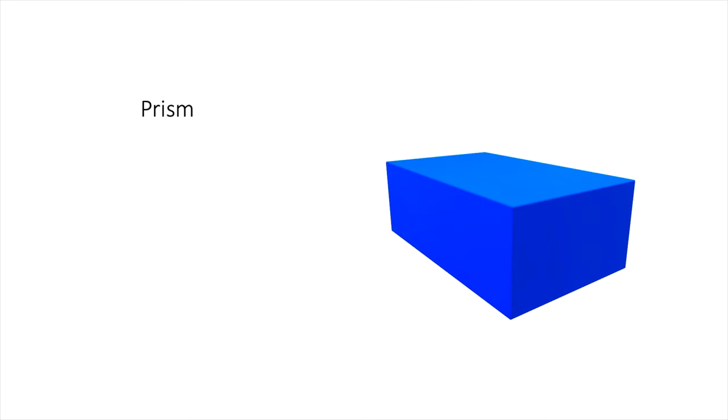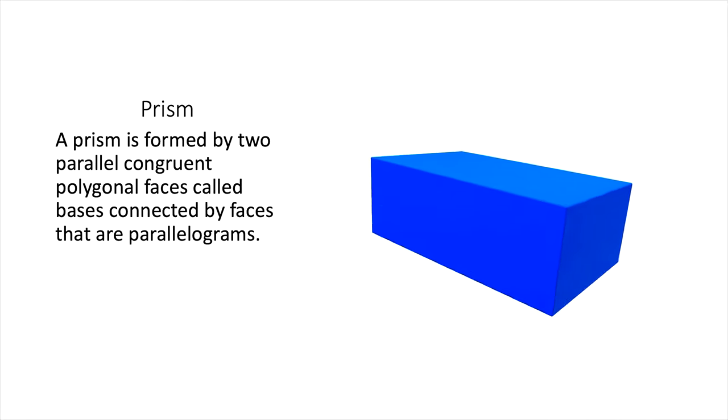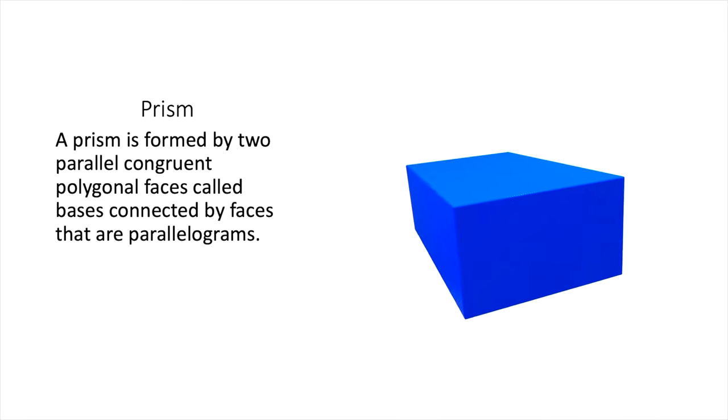So our first solid figure that we're going to talk about, and we're going to talk about four, is the prism. A prism is formed by two parallel congruent polygonal faces called bases, connected by faces that are parallelograms. So in this case, if we look at this one right here, we can see this would be what's called a rectangular prism.